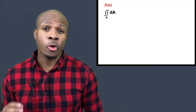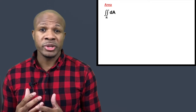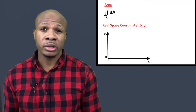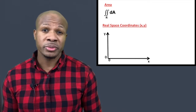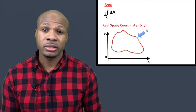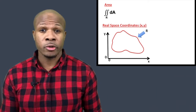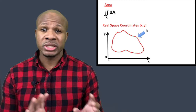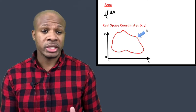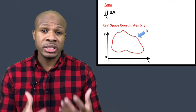When calculating an area you need to know what coordinates you're using. The coordinate system everyone should be familiar with is the Cartesian coordinate, or real space coordinates, called xy. These are called real space coordinates because when you plot the region in this coordinate space, you actually get the real picture of the region.